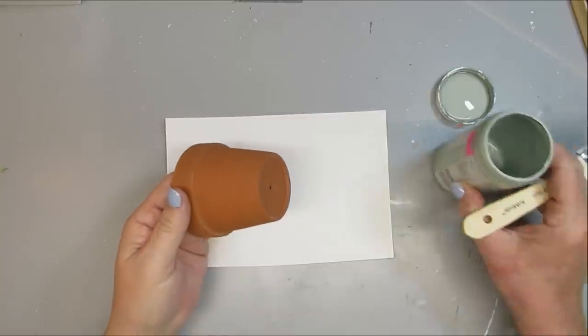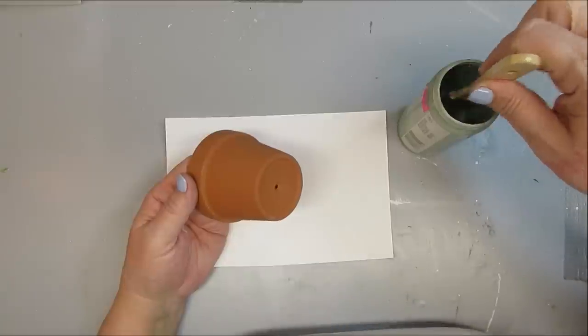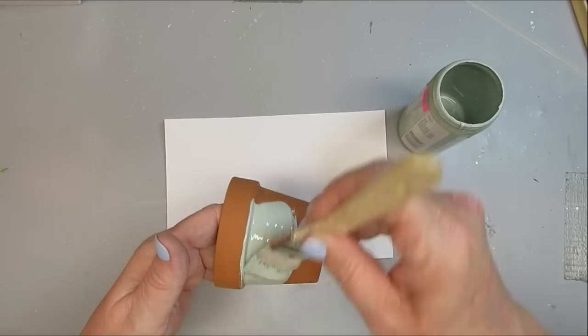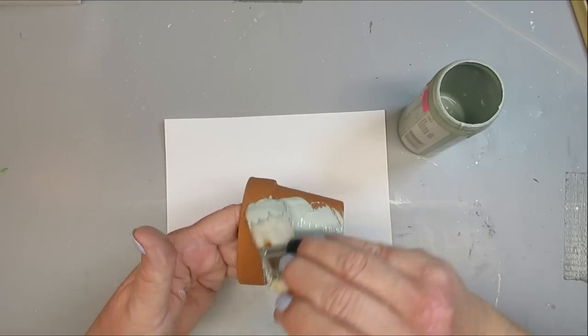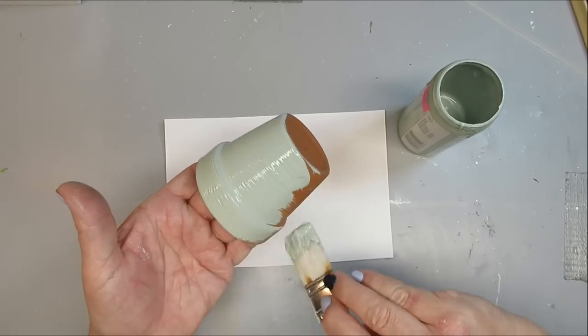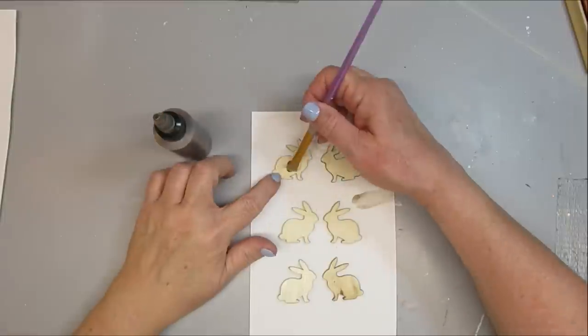I'm starting out by using one of these little mini terracotta pots that you can get in a pack of three at the dollar store and I'm going to be painting it with this pretty little sage color. I love this color for spring. One coat will do just fine on this pot.